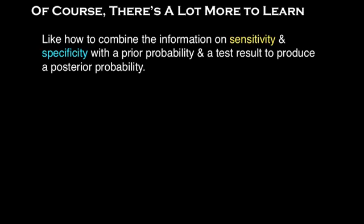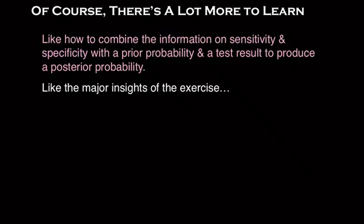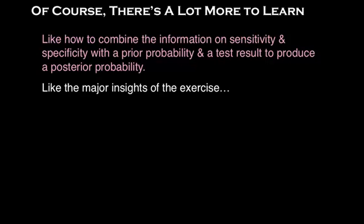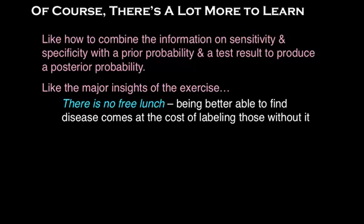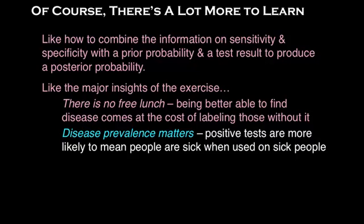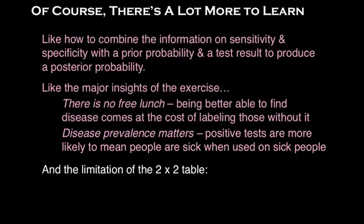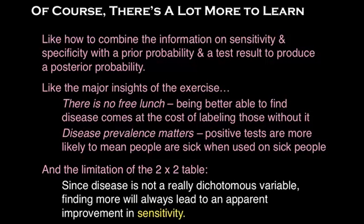Of course, there is a whole lot more to learn — like how to combine the information on sensitivity and specificity with a prior probability and a test result to produce a posterior probability. Like the major insights: there's no free lunch — being better able to find disease comes at the cost of labeling those without it. And that disease prevalence matters: positive tests are more likely to mean people are sick when used on sick people. And the limitation of the 2x2 table: since disease is not really a dichotomous variable — it's not either present or absent — there's a whole lot in between.